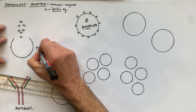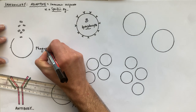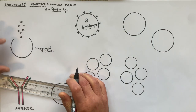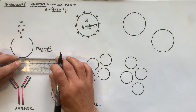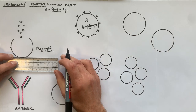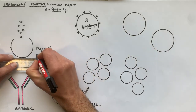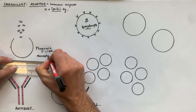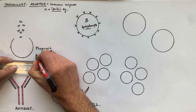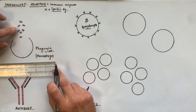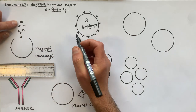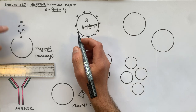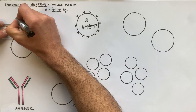We're going to start with a phagocytic cell. You've done phagocytosis in the cells topic, and one specific type of phagocytic cell is called a macrophage. The squares or rectangles on the left represent the pathogen — so in this case it could be a bacterial infection.